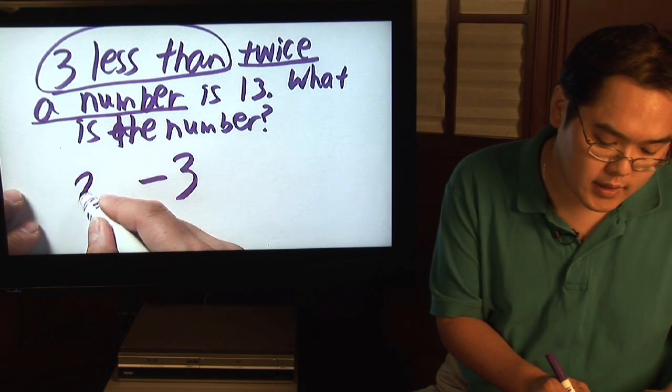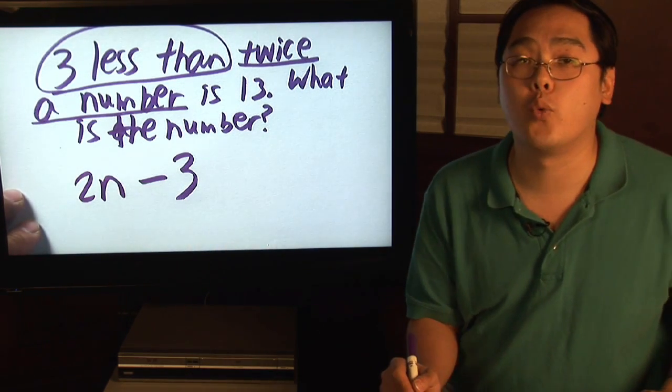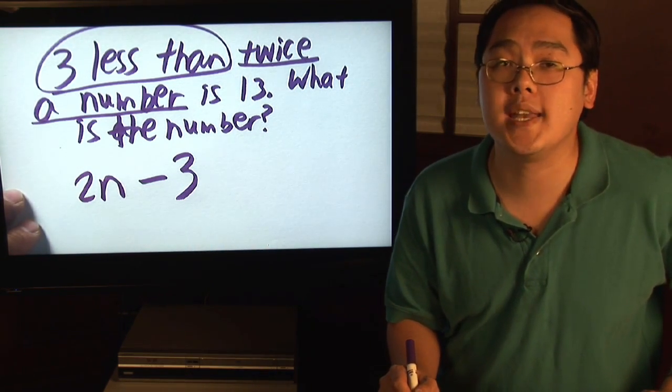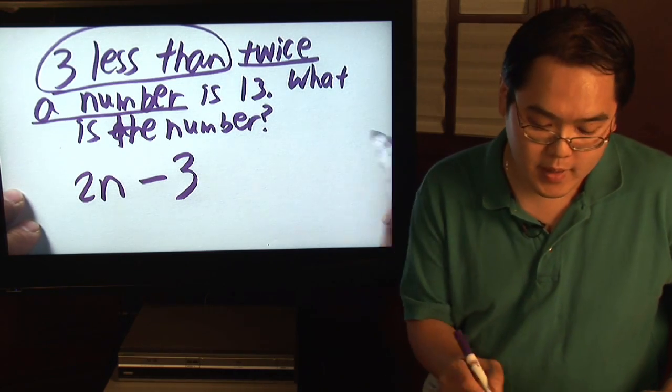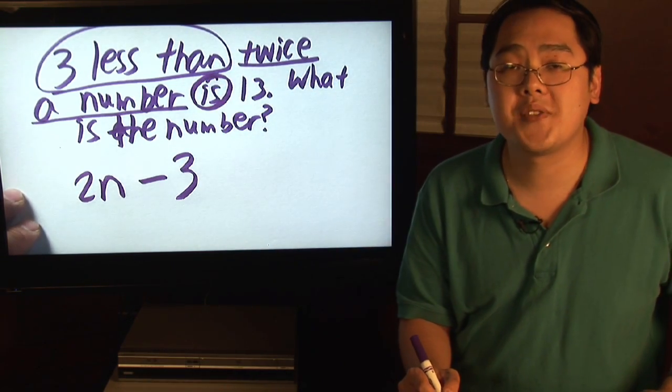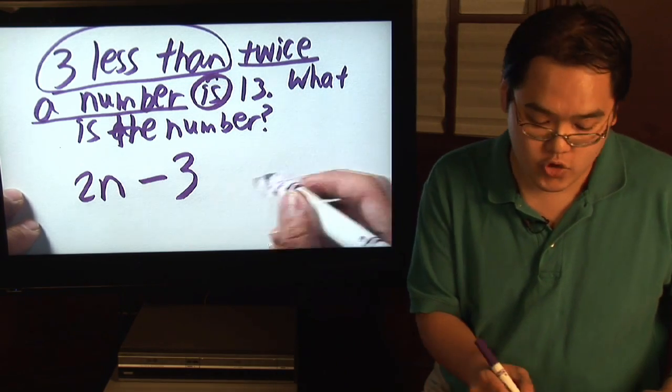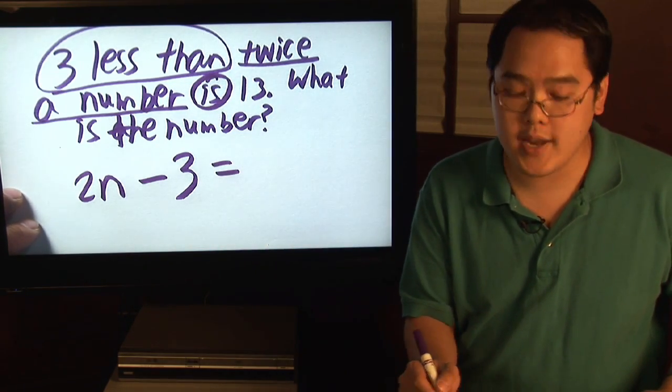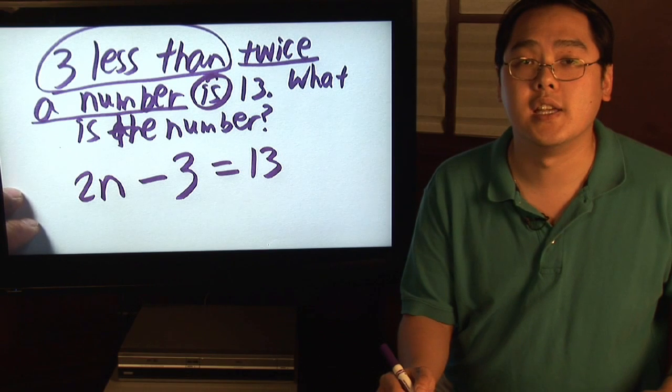So let's let n be the number. On one side of the equation, you have 2n minus 3. Is is another way of saying equal sign, so just put the equal symbol after that. And of course, you know the rest is 13.